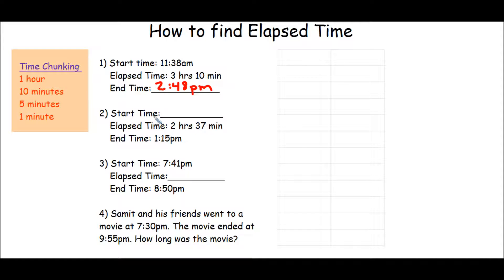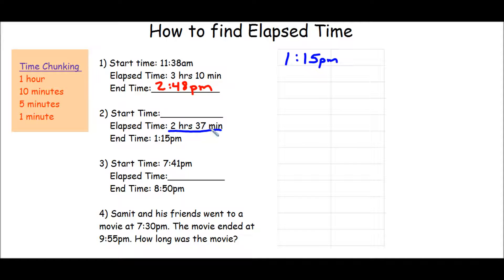Now let's say they don't give you the start time, but they tell you how much time has passed and at what time the event ended. We list first the event ending time, which is 1:15 PM, and instead of adding hours and minutes, we're going to take away 2 hours and 37 minutes, chunks at a time. So let's take away first one hour.